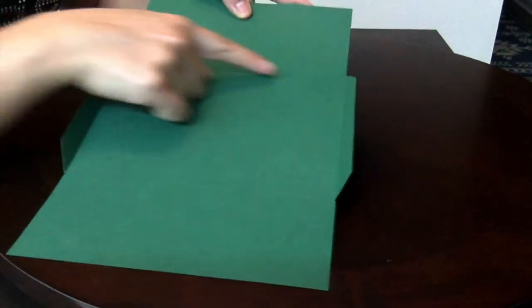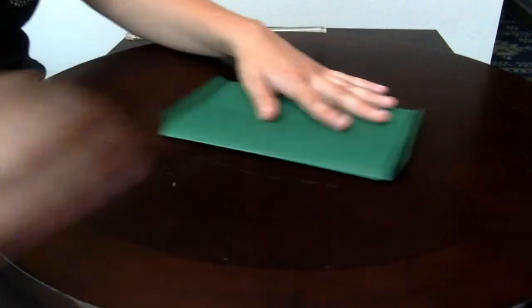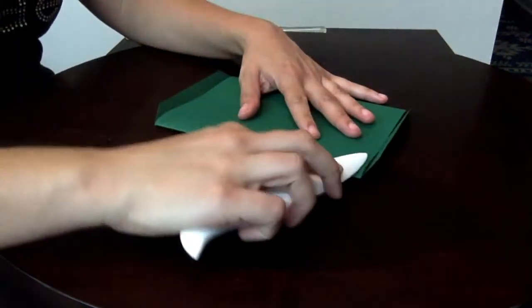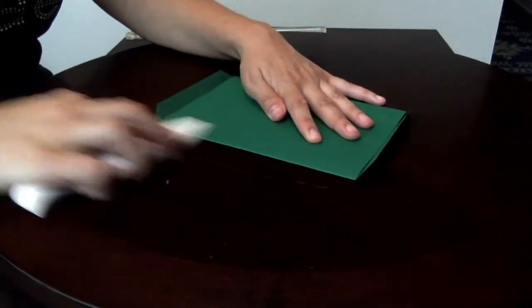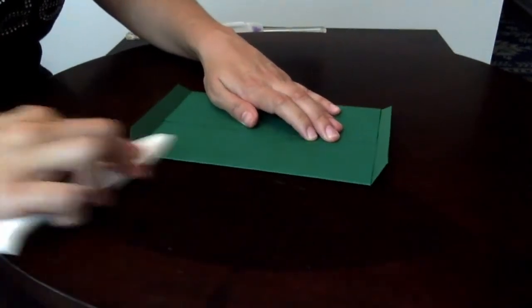Now we're going to fold the rest of our folds here. We just have these two left and just use your hands and fold them in. If you've scored it, you don't need the bone to help you. You just need it to help you flatten the edge and make it a nice little crease like we did on the other sides.